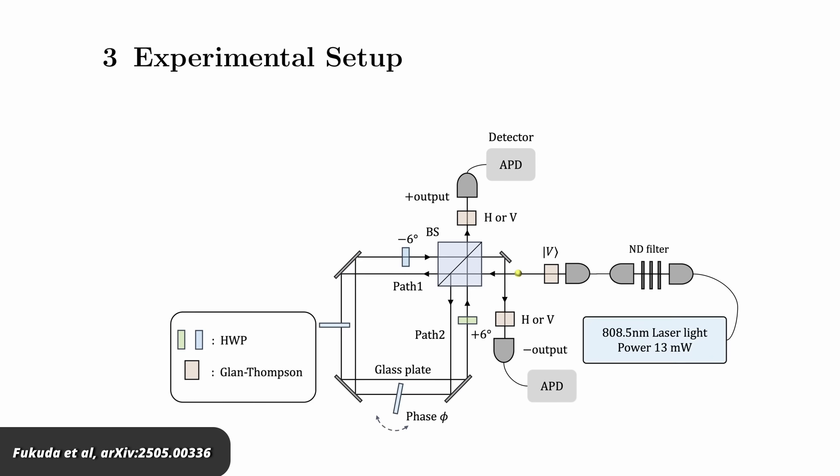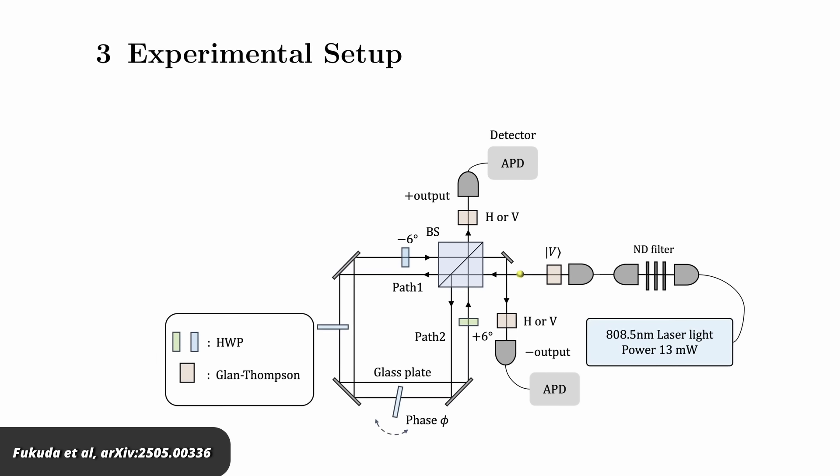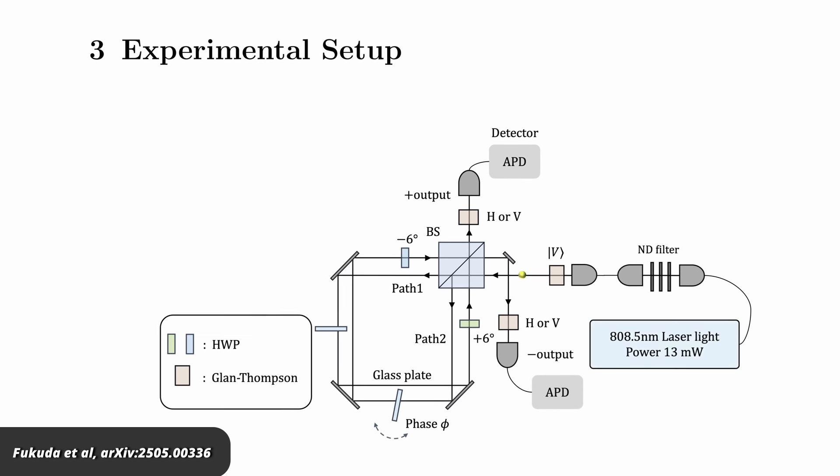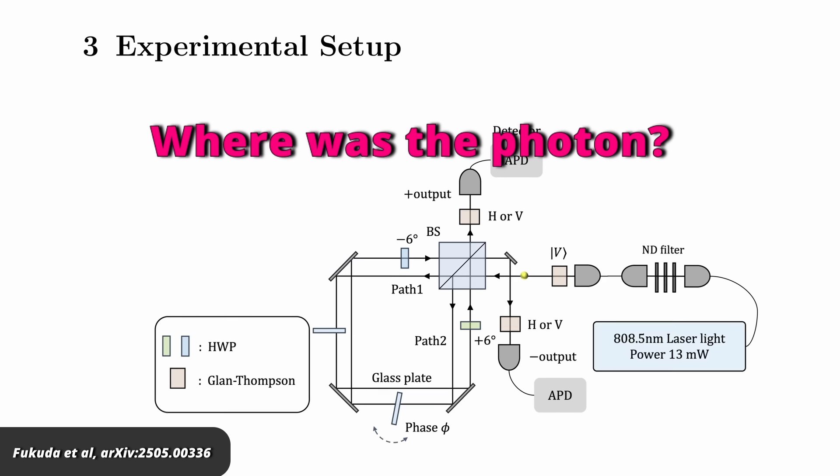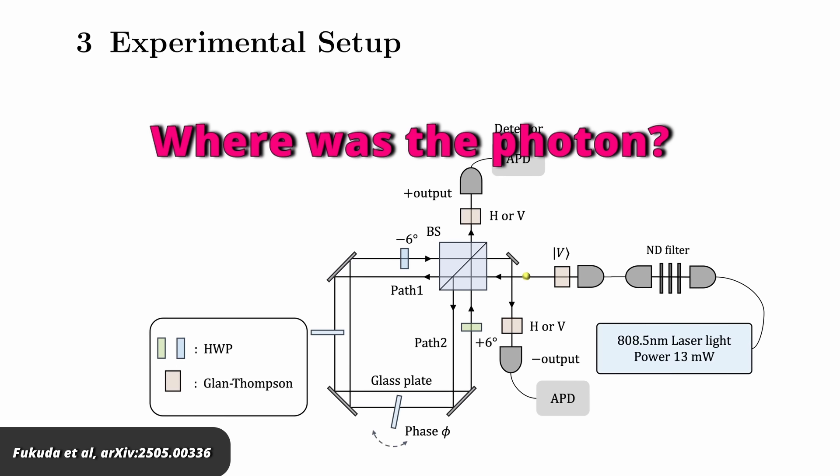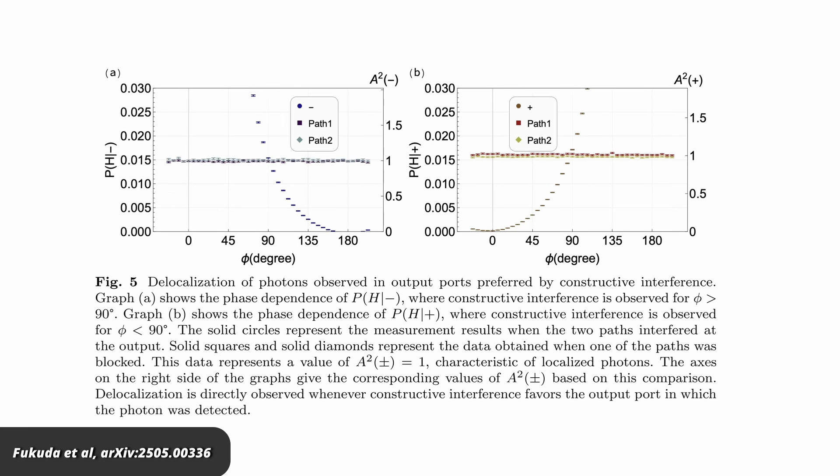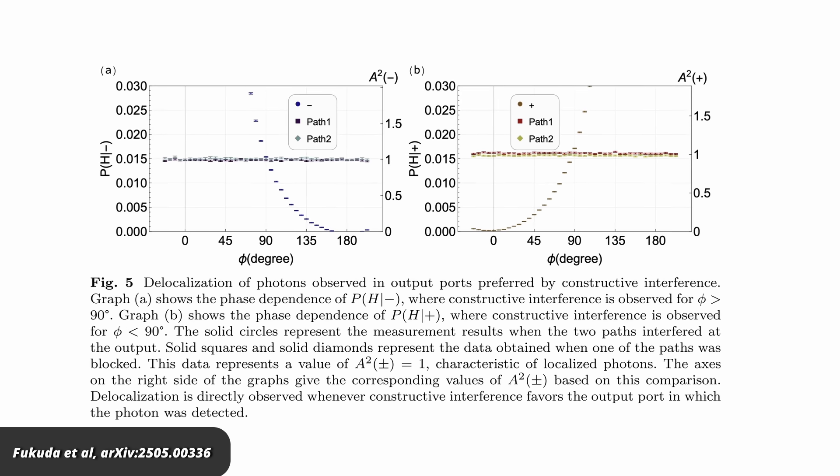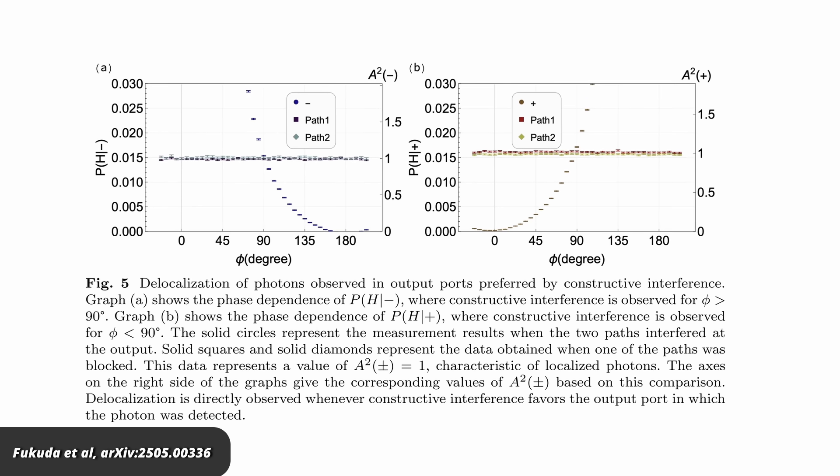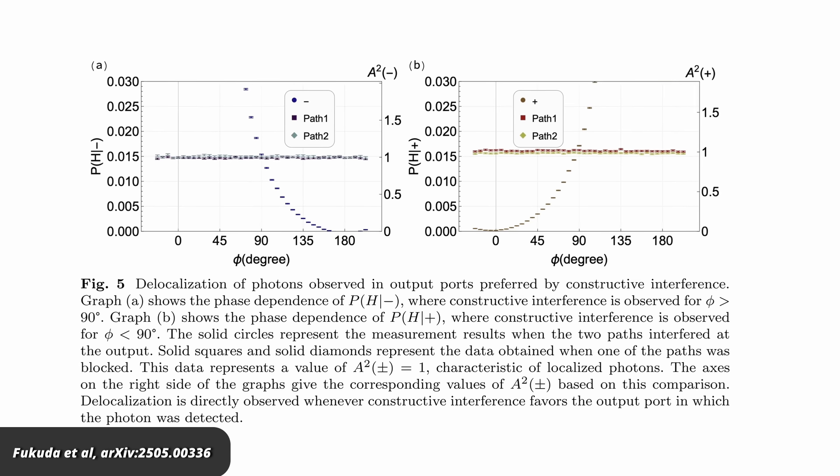But now they can measure the polarization in addition to the output port, and that tells them a little bit about where the photon must have gone. What they see is that in the normally bright port, the polarizations can cancel out, and that can only be the case if the photon went both paths.